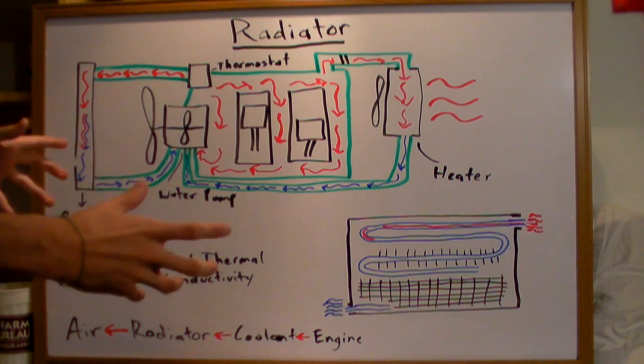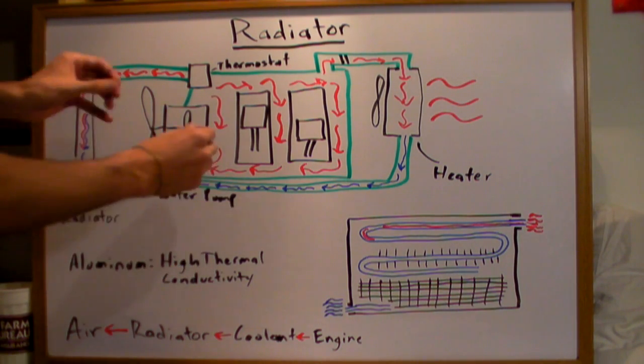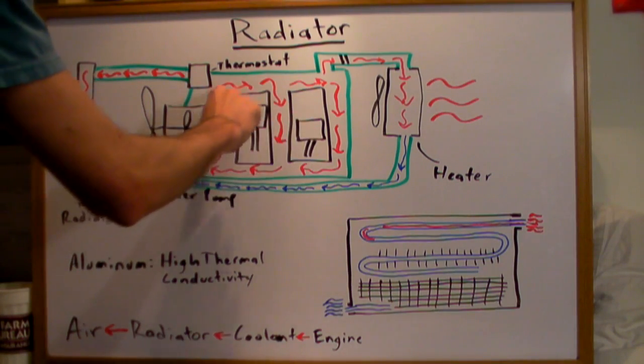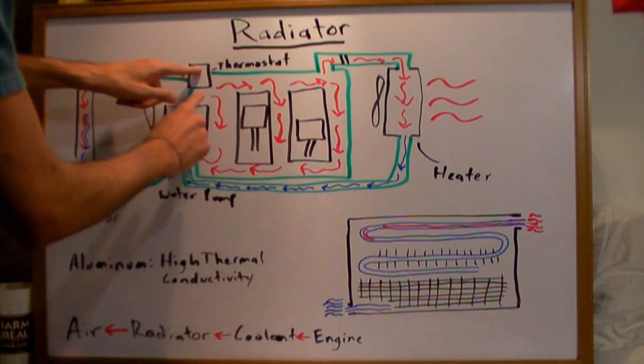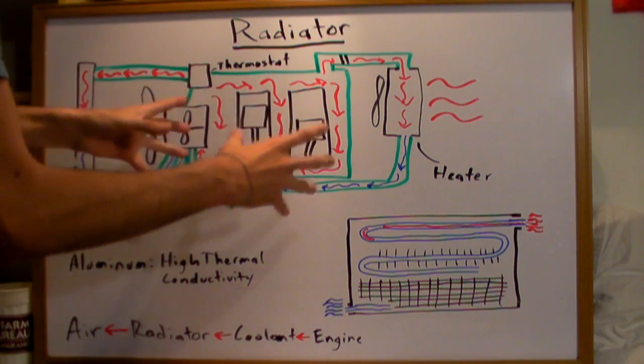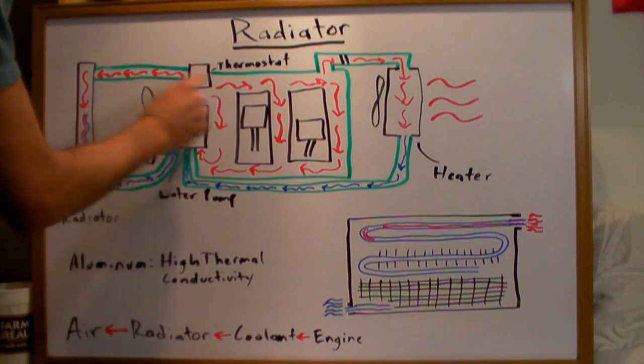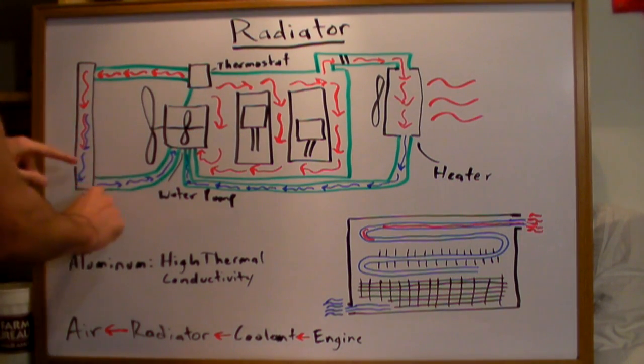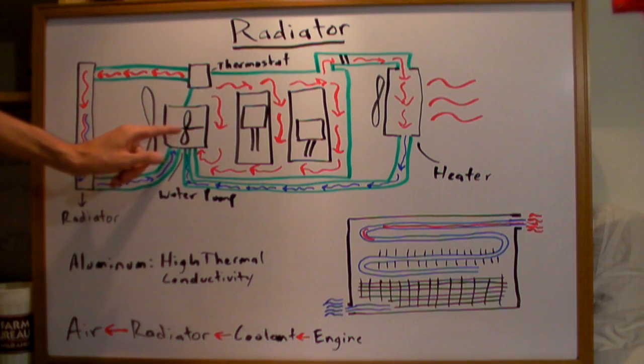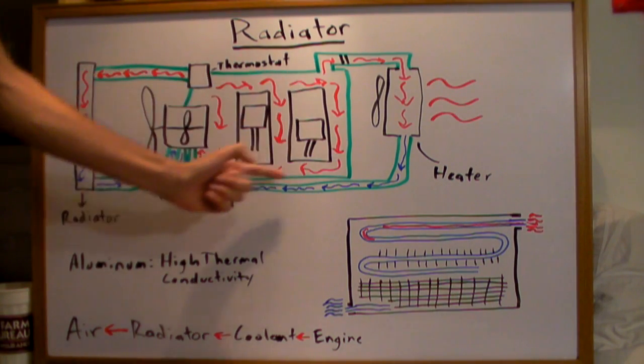Now when your engine starts, it's going to be cold, so you've got a thermostat right here. What this does is as you've got coolant running through, it looks at the temperature of it. Once the temperature gets too high and your engine is warmed up, then it will pass the coolant back through the radiator and then it will come cool through the radiator. Here the cool fluid will come back to the water pump and then be pumped out back into the engine.